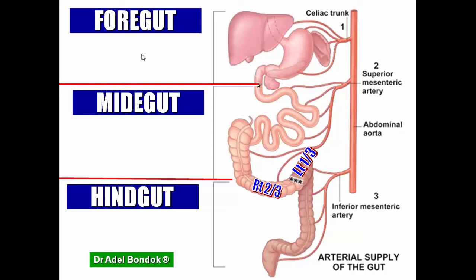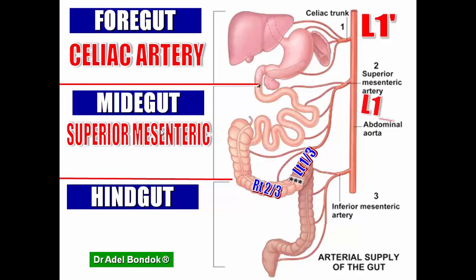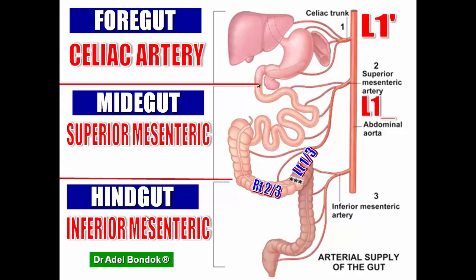The foregut is supplied by the celiac artery, which arises from the front of the abdominal aorta at the level of the upper border of L1. The midgut is supplied by the superior mesenteric artery, which arises from the front of the abdominal aorta at the level of the lower border of L1. The hindgut is supplied by the inferior mesenteric artery, which arises from the front of the abdominal aorta at the level of L3.